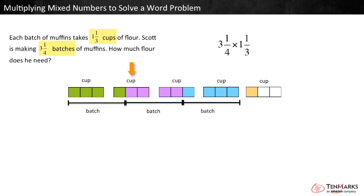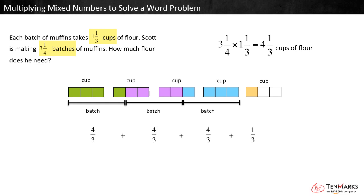One, two, three, four whole cups plus one-third of a cup. Scott used four and one-third cups. We could represent this as addition by writing four-thirds plus four-thirds plus four-thirds plus one-third. That would be three and one-fourth groups of one and one-third, or four and one-third in all.